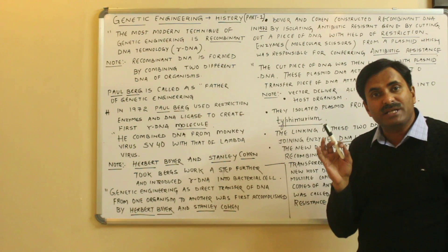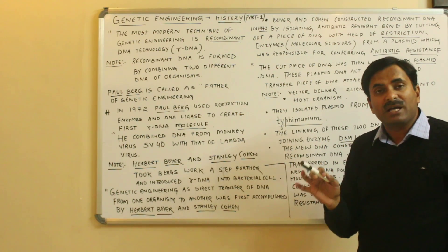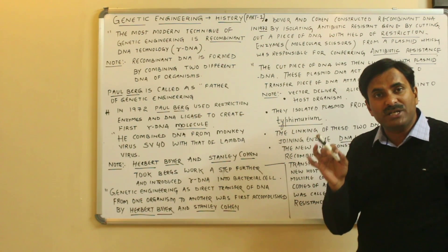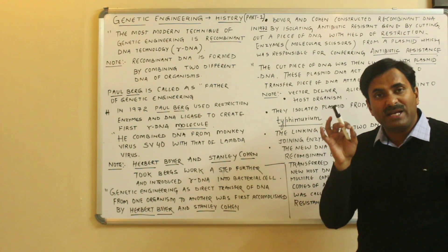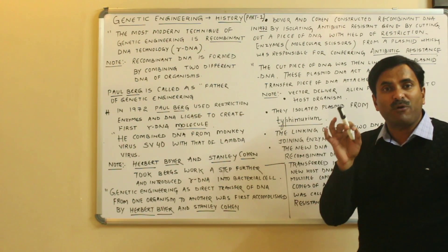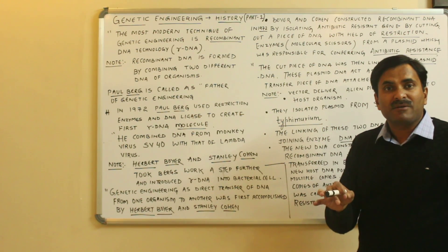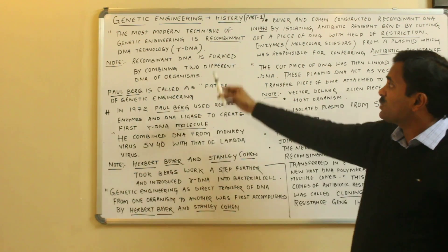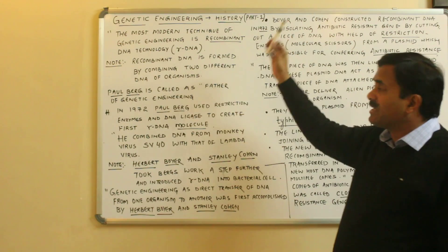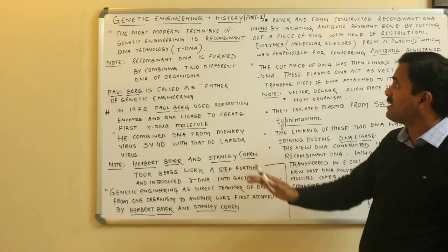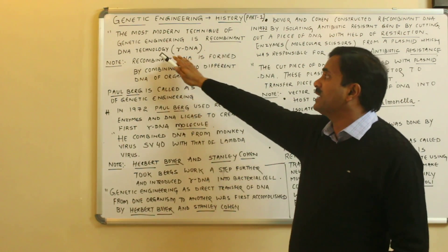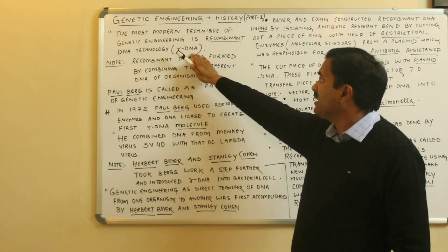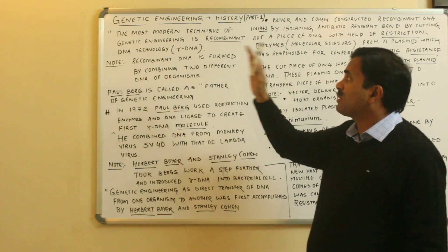The most modern technique of genetic engineering is the recombinant DNA technology. As seen in the previous video, we can modify the genetic constitution of any cell by introduction of foreign DNA into it — that technique is called genetic engineering. The most modern technique used at present is recombinant DNA technology, written in short as rDNA.